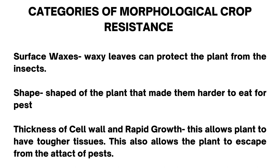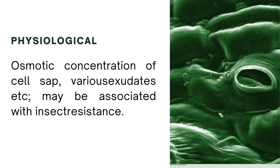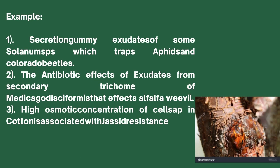In physiological resistance, this involves the solute concentration of sap and exudates that allow the plant to continue living if damaged by the pest. Examples include: first, the secretion of glandular exudates of some Solanum species which trap aphids and Colorado beetle; second, the antibiotic effect of exudates from secondary trichomes of Medicago disciformis that affects the alfalfa weevil.